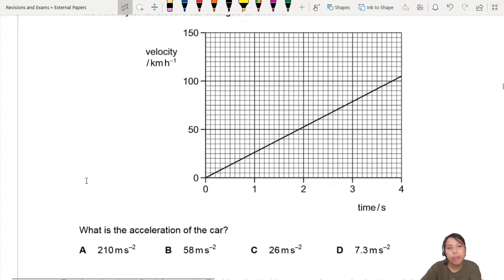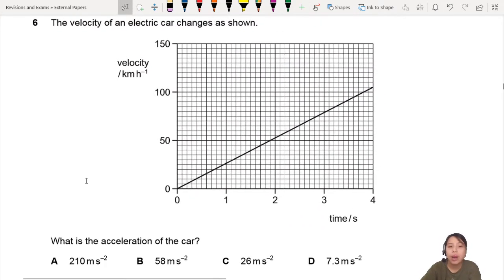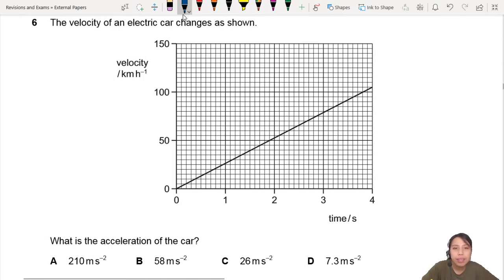You need to remember what's the definition of acceleration and how it relates to velocity. Acceleration is what we call the rate of change of velocity. So we write it as delta v delta t, or if you want to be more mathematically correct, dv dt.